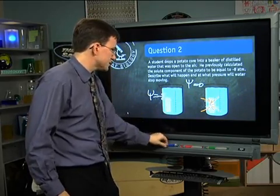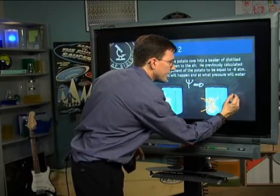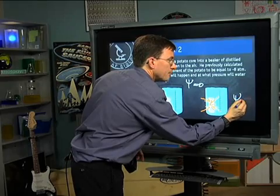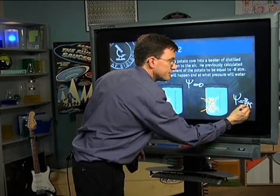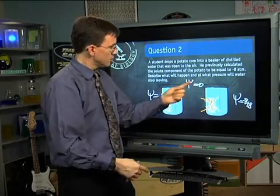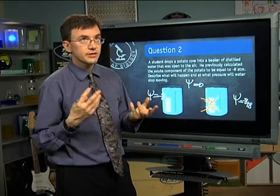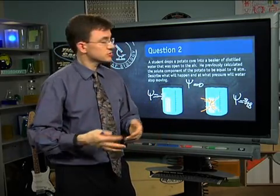So what happens is that the pressure will build up until it equals the zero of the exterior. How can we do that? Well, it's simple enough. The cell will have a psi of negative 8 solute component plus positive 8 atmospheres of pressure. Negative 8 plus 8 equals zero. So there you go.